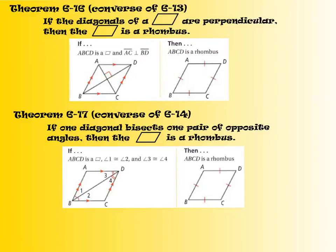In this second theorem, theorem 6-17, this is the converse of theorem 6-14 from yesterday. If one diagonal bisects one pair of opposite angles, then the parallelogram is a rhombus. So now if we happen to see these congruent angles here because the diagonal has bisected opposite angles, then we know it must absolutely positively be a rhombus.